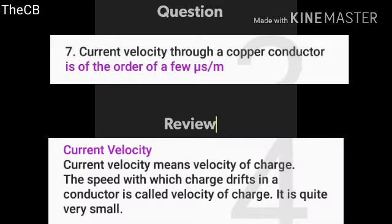Current velocity means the velocity of charge. The speed with which charge drifts in a conductor is called the velocity of charge. This drift speed is quite very small.